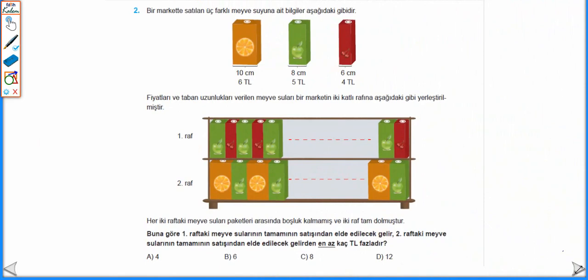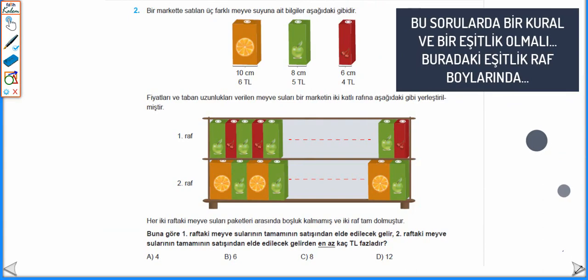İkinci sorumuzla devam edelim. Bir markette satılan 3 farklı meyve suyuna ait bilgiler aşağıdaki gibidir. Fiyatları ve taban uzunlukları verilen meyve sular bir marketin iki katlı rafına yerleştirilmiştir. Her iki raftaki meyve sulara paketler arasında boşluk kalmamış ve iki raf tam dolmuştur. Buna göre birinci raftaki meyve suların tamamının satışından elde edilecek gelir, ikinci raftaki meyve suların tamamının satışından elde edilecek gelirden en az kaç TL fazladır?